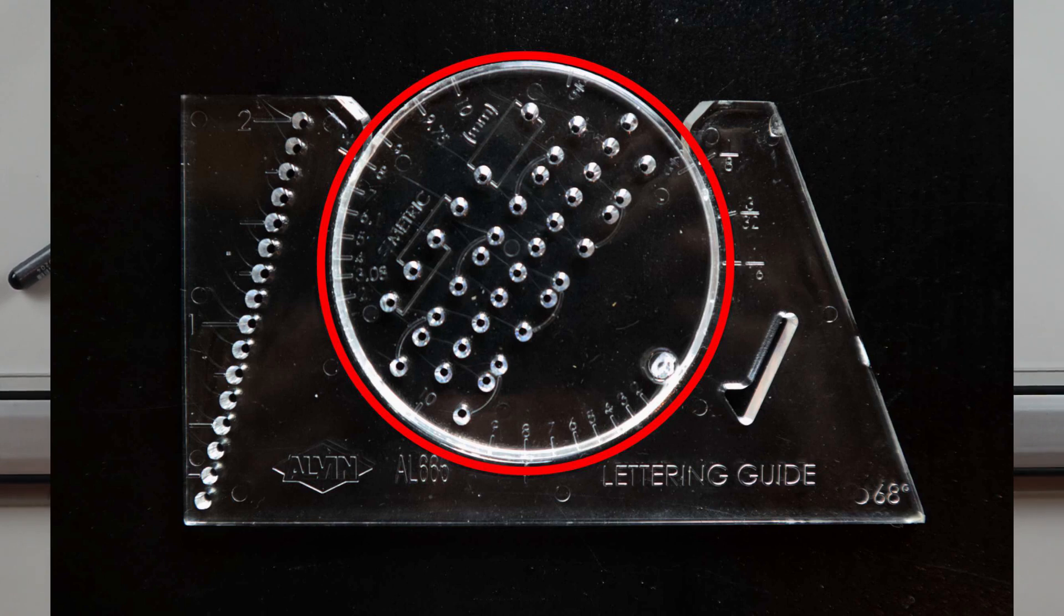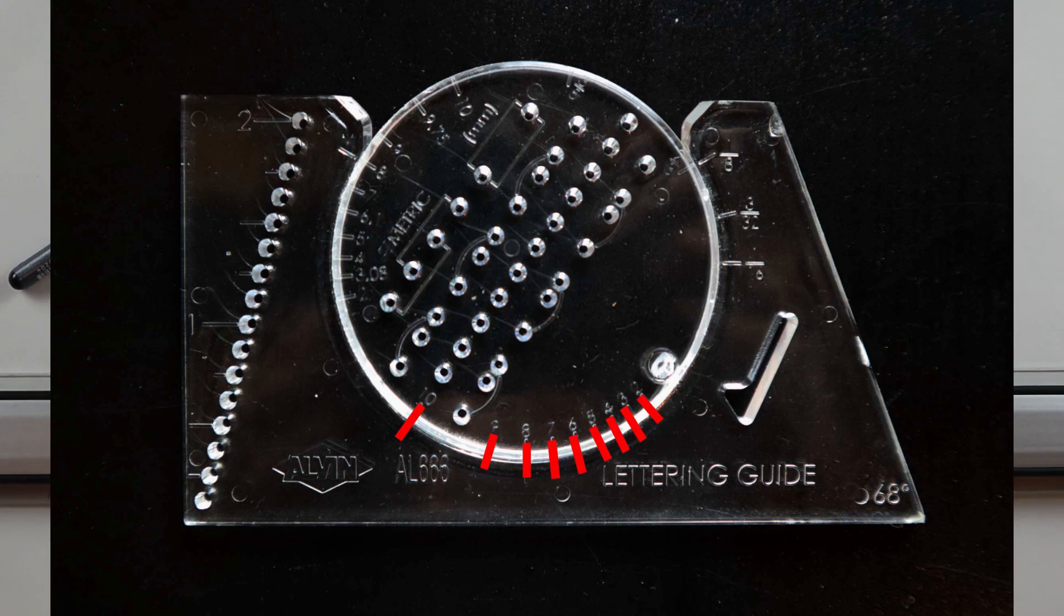On the bottom of the rotating disk you're going to see the numbers 2 through 10. Across from these numbers on the base is a little raised tick mark which is used to designate the number or metric you're going to use. We're going to get back to what these numbers mean in a bit, but right now let's focus on all the different columns of holes and what they mean.